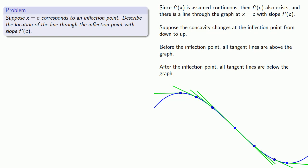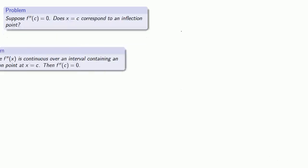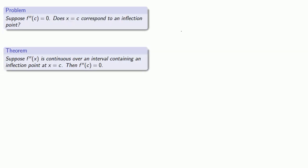We get the following result: let x equals c correspond to an inflection point on the graph of y equals f of x, where f prime of x and f double prime of x are continuous. The line through the inflection point with slope f prime of c will pass through the curve. So we know that if c is a point of inflection, then the second derivative at c is either zero or doesn't exist.